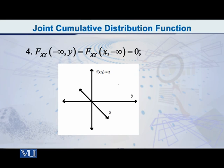Even if you do not draw any diagram, you can understand that it is because minus infinity is less than or equal to minus infinity — so we cannot have X being less than or equal to minus infinity or Y being less than or equal to minus infinity. If these are impossible events, then obviously that probability has to be equal to zero. So this is property number four.